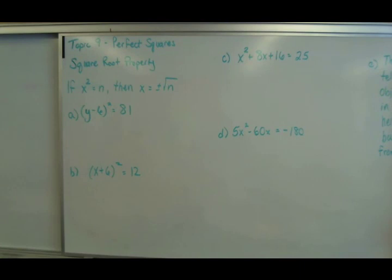All right guys, welcome back. Today we're going to look at topic nine of this first chapter, which is called perfect squares. Hopefully you've been introduced to what perfect squares are. Perfect squares are numbers like 25, 36, 49—basically two numbers that multiply together to give you that product.